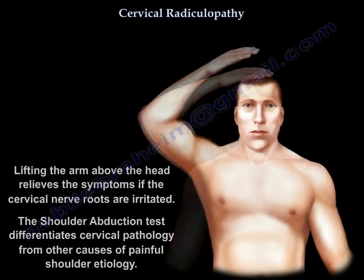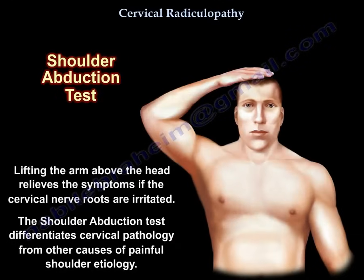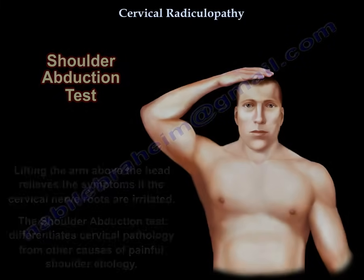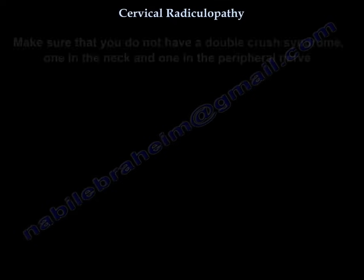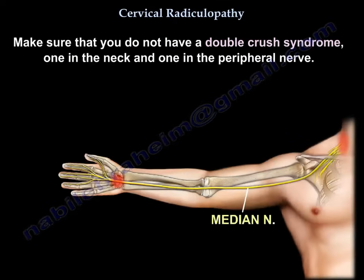The shoulder abduction test: lifting the arm above the head relieves the symptoms. It differentiates cervical pathology from other causes of painful shoulder. Also make sure you don't have a double crush syndrome — one compression in the neck and one in the peripheral nerve.